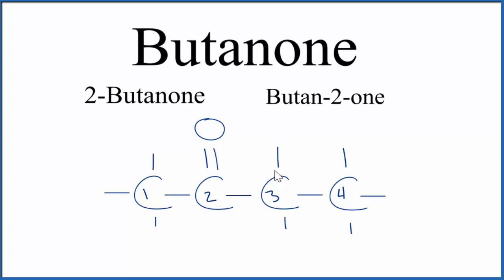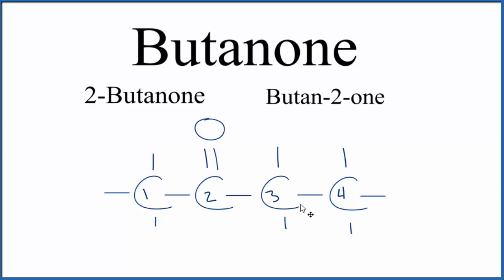If we put the double bond over here, it would still be the same thing — we would just start numbering from this side. So it's always going to be on the second carbon. Because of that, sometimes we just say butanone, because we know this is really the only place it can be — on the second carbon. Or if we put it here, we'd count one, two, and this would be the second carbon.